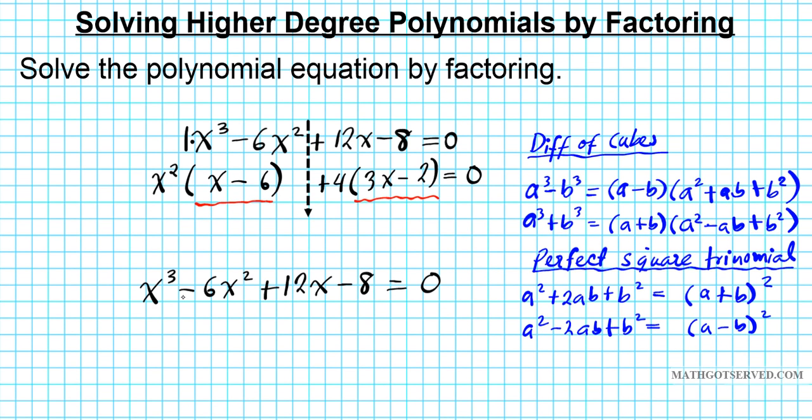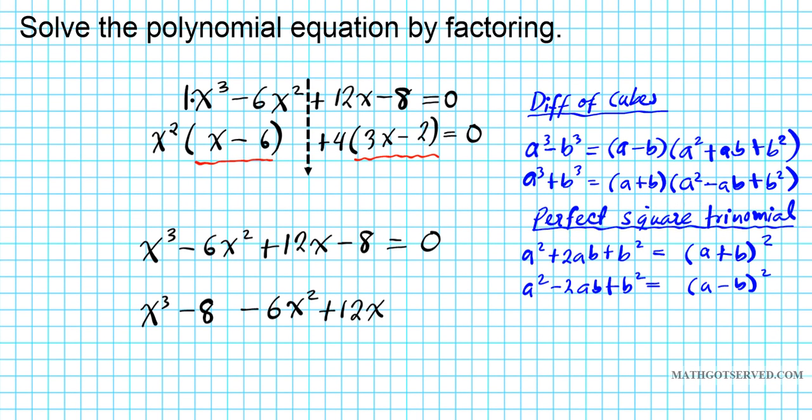So what I'm going to do is I'm going to group the first and the last, x³ - 8, and then the middle together, -6x² + 12x. Now if you look at these two right here, we can cluster them together. What is this? This is a difference of cubes. So now that we've identified this as a difference of cubes, how do we factor difference of cubes? Let me go over the steps for factoring difference of cubes on the right hand corner right here.